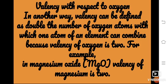The next topic is valence with respect to oxygen. We compare the valence of other elements with respect to oxygen. The valence of oxygen is 2. For example, in magnesium oxide MgO, both magnesium and oxygen have a valence of 2, so we do not write any valence number at the bottom of the molecule.